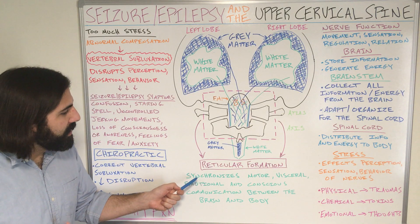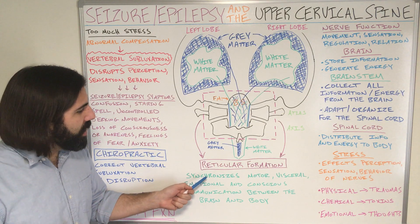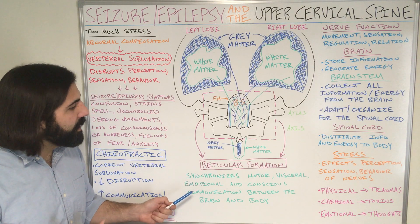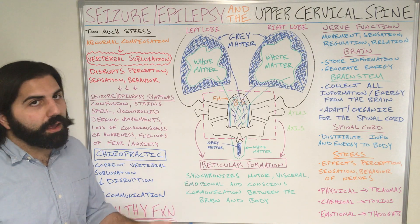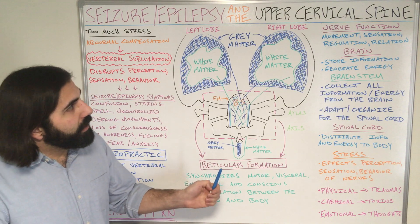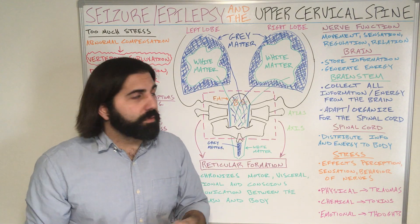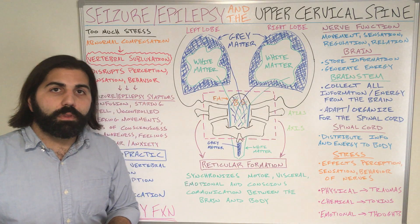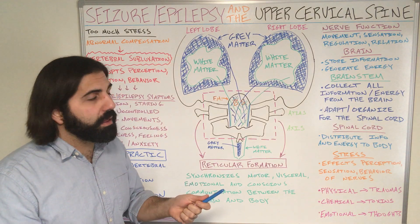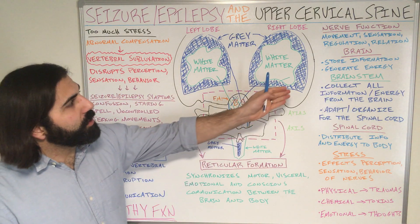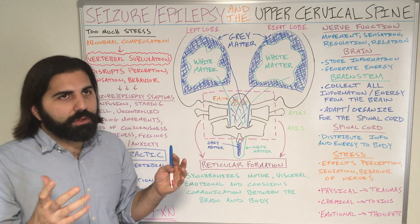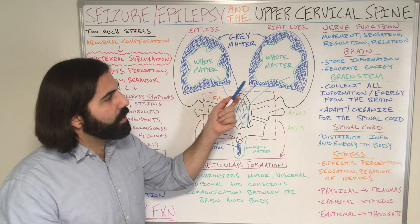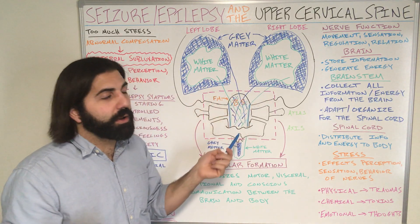The reticular formation has a special job of synchronizing motor, visceral, emotional, and conscious communication between the brain and the body. There are four main functions of our nerves: they create all the movements we make, they sense everything we feel, they regulate all our body organs, and they relate us to the outside world. Our brain serves two main jobs within the functionality of our nerve system — it stores information and it generates energy.